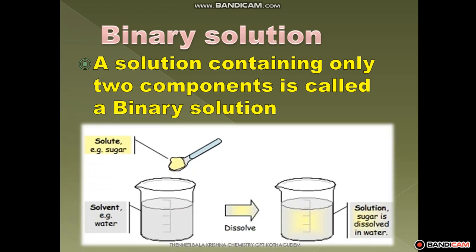An example of a binary solution: when we dissolve sugar in water, it is uniformly dissolved and evenly distributed. The components cannot be separated by physical methods, so it is called a homogeneous mixture. Since it is a homogeneous mixture, it is called a solution. This solution is prepared using only two components, so it is called a binary solution.